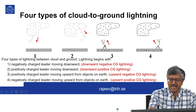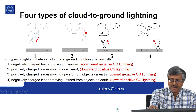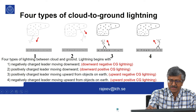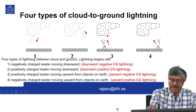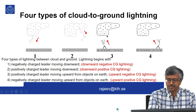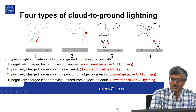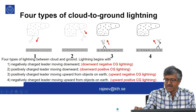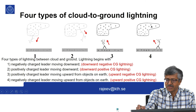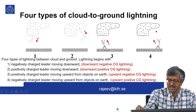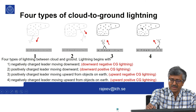In the third type, from tall structures or mountains, an upward positive leader is initiated, and in response a negative leader comes down from the cloud. In the end you remove the negative charges in the cloud, making it an upward negative cloud-to-ground lightning. In the fourth type, negative leaders go upward and connect to the positive charge, and the positive charge comes down; in the end the positive charge is removed or neutralized — though only partly in all these cases.